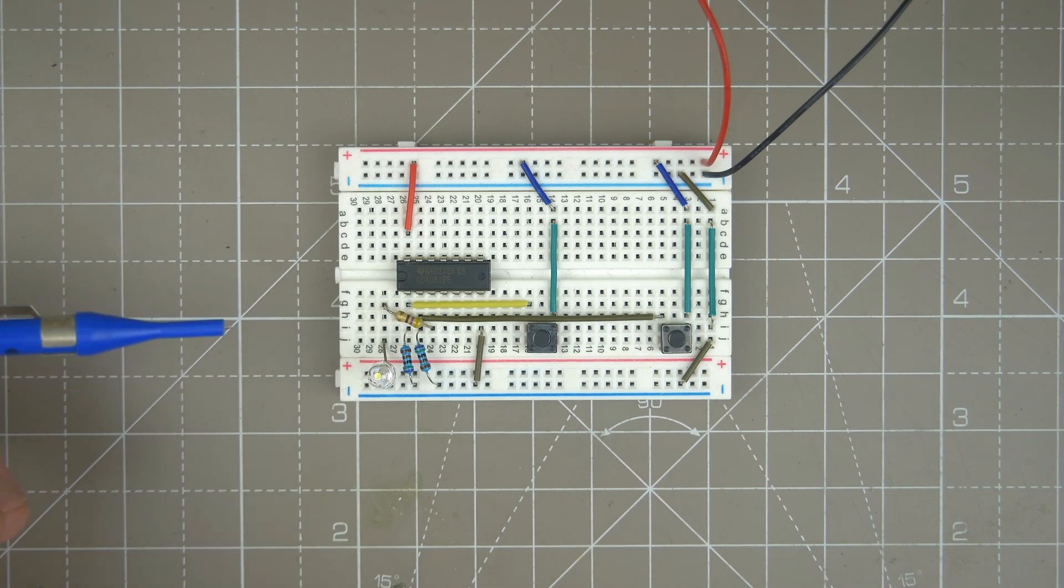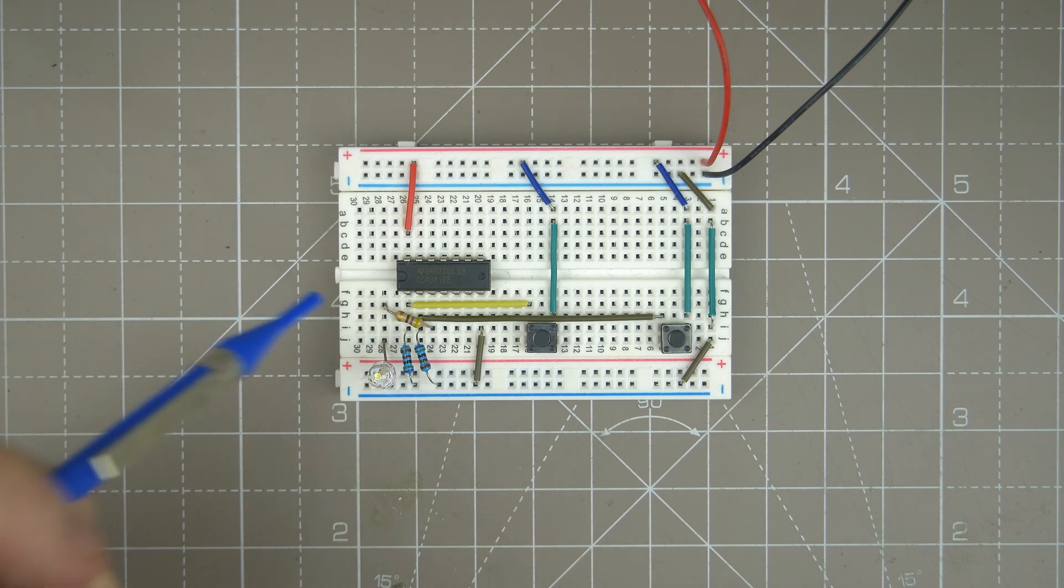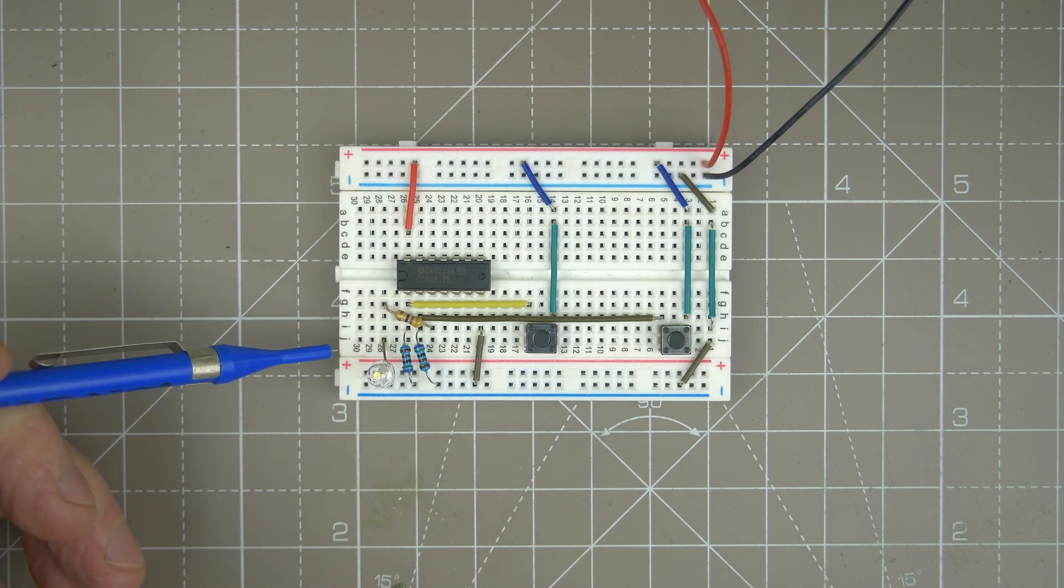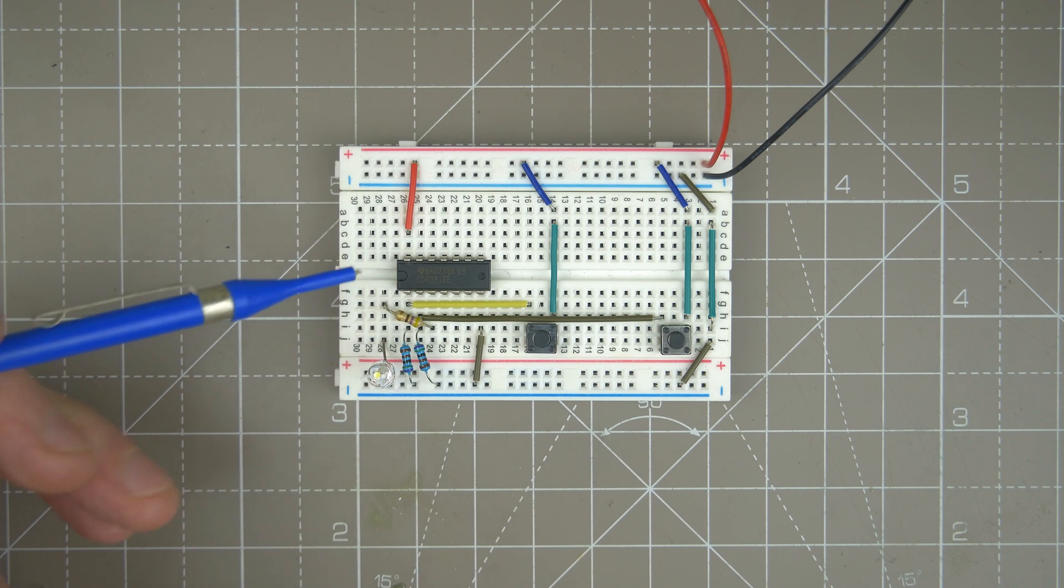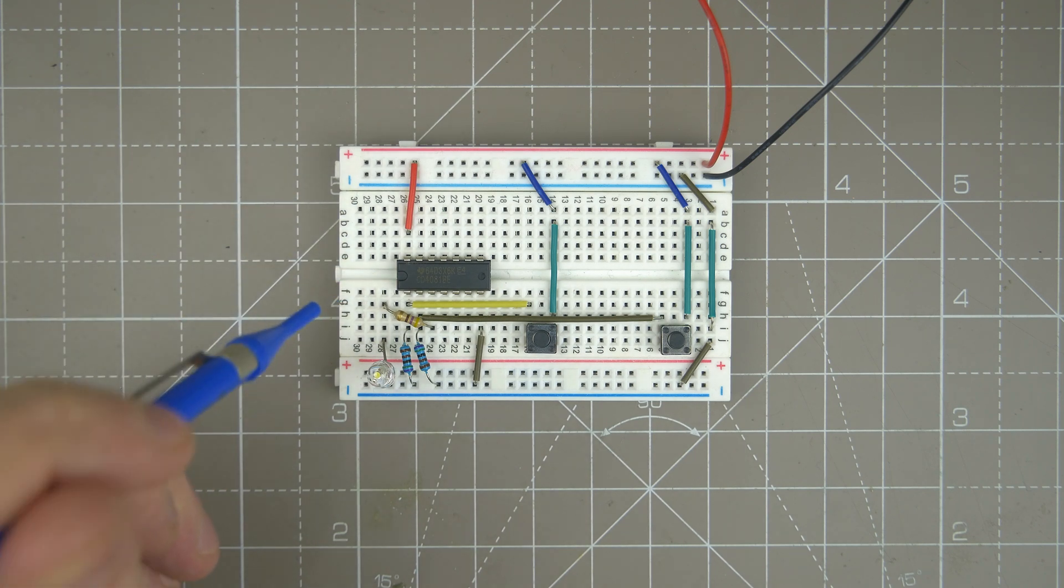Welcome back to the 4000 series, where we take a look at some of the 4000 series CMOS devices. Today we're going to be looking at the CD4081, which is a quad two-input AND gate.